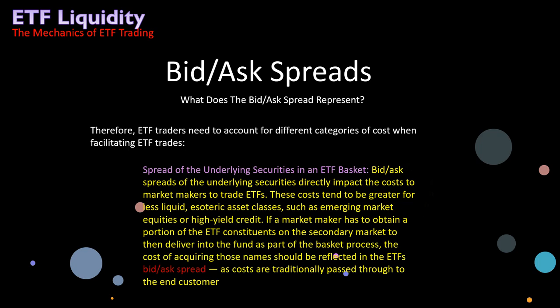Another cost category is the spread of underlying securities in an ETF basket. The bid-ask spreads of the underlying securities directly impact the cost for market makers to trade the ETFs. These costs tend to be greater for less liquid, esoteric asset classes such as emerging market equities or high-yield credit. If a market maker has to obtain a portion of the ETF constituents on the secondary market to deliver into the fund, the cost of acquiring those names should be reflected in the ETF's bid-ask spread, as costs are traditionally passed through to the end customer.